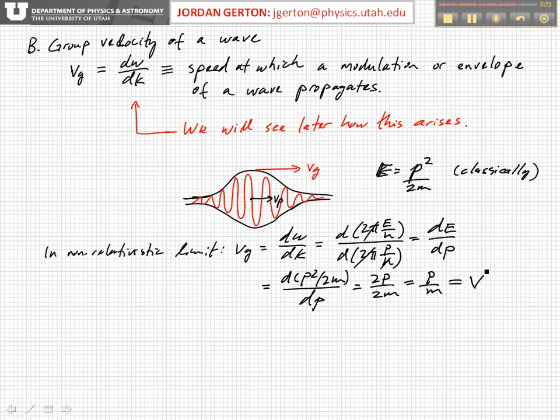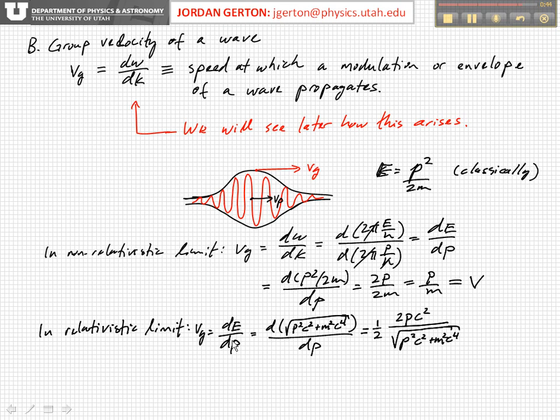And now we can do the same sort of calculation in the relativistic limit. So here I've written it down in the relativistic limit where I've used the relativistic expression for the total energy. If we cancel the 2s and we realize that p = γmv times c², and this is just the total energy, so this is γmc², then this is equal to v. So again, we see in the relativistic limit that the group velocity is also equal to the particle velocity, as we might expect sort of intuitively.